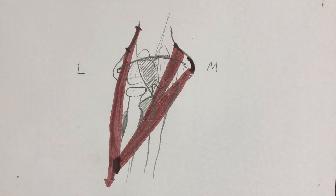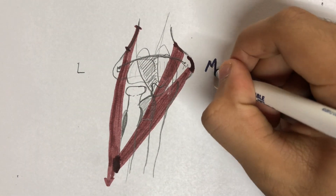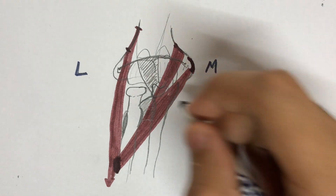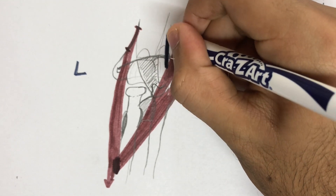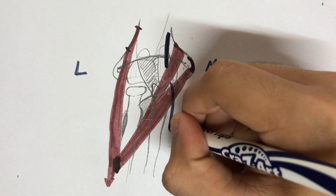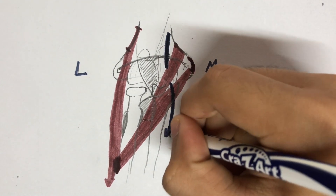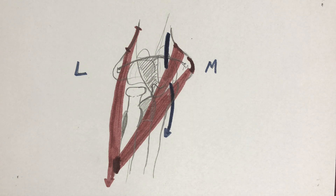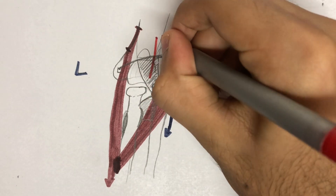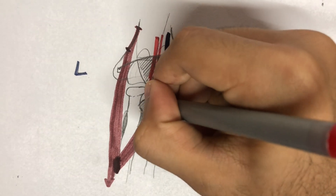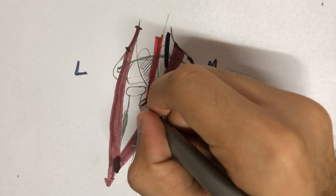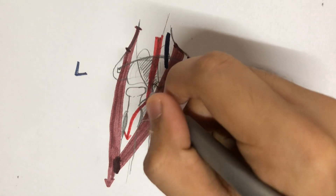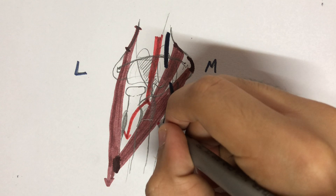The contents of the cubital fossa, from medial to lateral, begin with the median nerve as the most medial structure, which runs downwards and passes between the two heads of the pronator teres. Lateral to that is the brachial artery, which runs downwards towards the neck of the radius where it terminates into the radial artery and the ulnar artery, the ulnar artery running below the pronator teres.